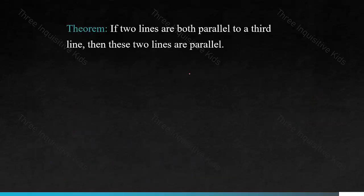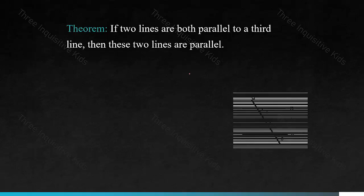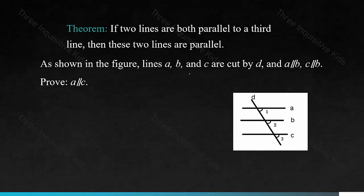If two lines are both parallel to a third line, then these two lines are parallel. This is a new theorem. As shown in the figure, lines A, B, and C are cut by D, and A is parallel to B, and C is parallel to B. Prove A is parallel to C. Because A is parallel to B, therefore angle 1 equals angle 2. In the same way, angle 2 equals angle 3. Therefore, angle 1 equals angle 3 using the substitution property of equality. Therefore, A is also parallel to C.